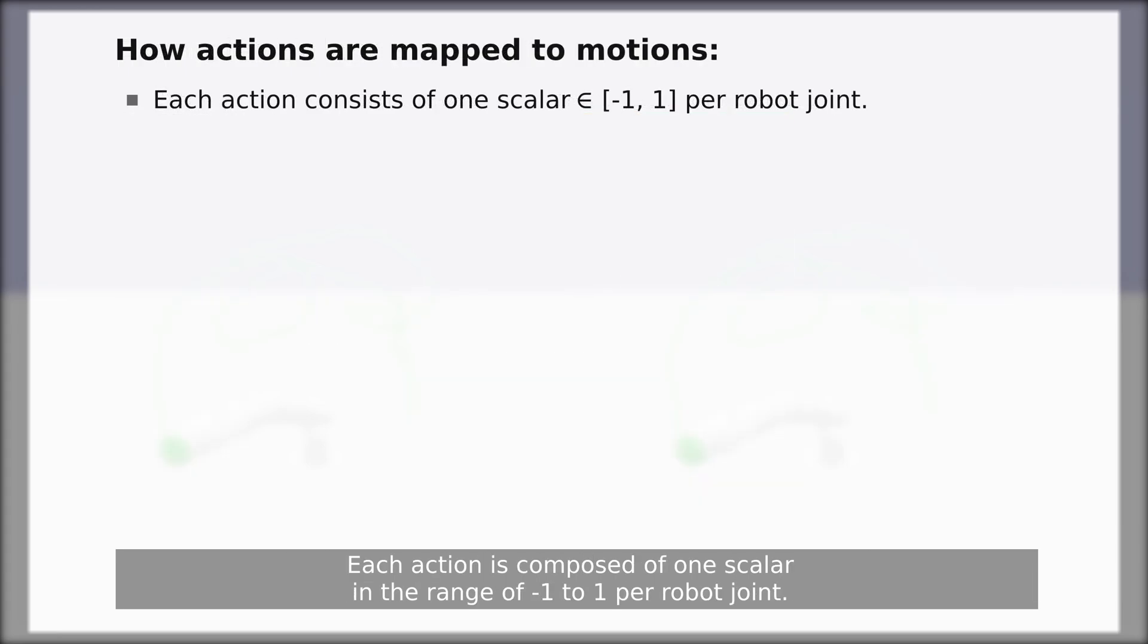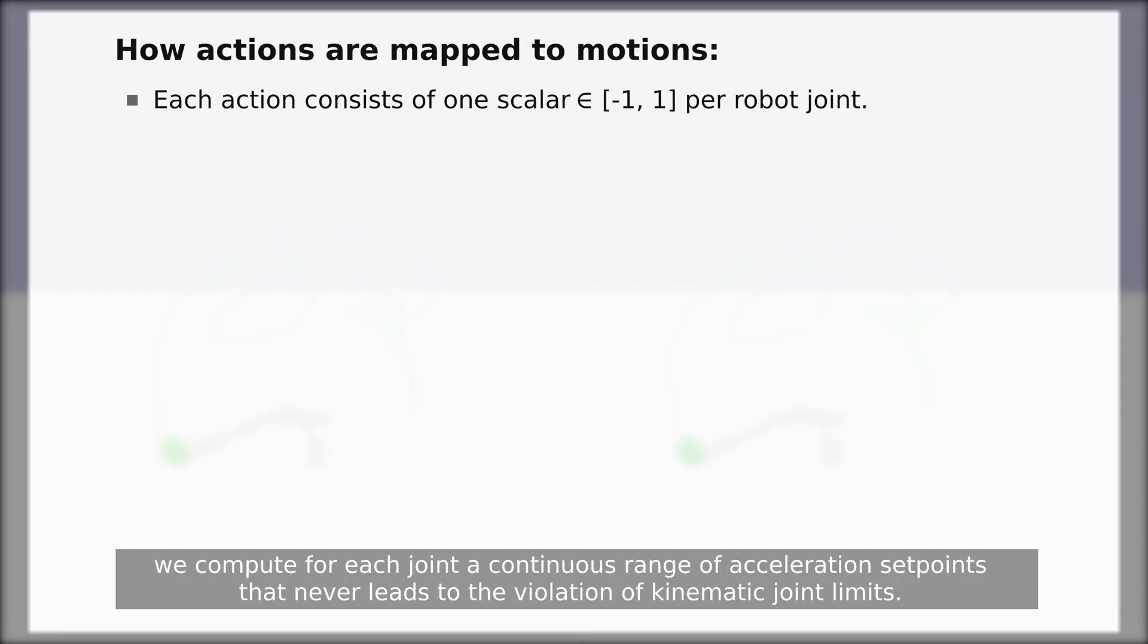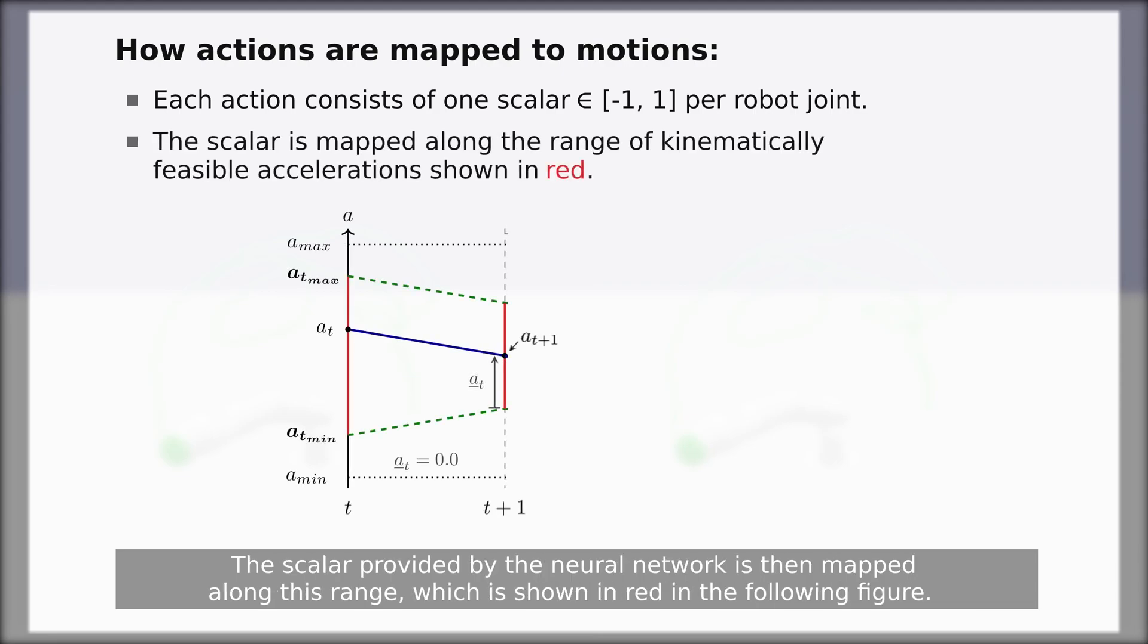Each action is composed of one scalar in the range of minus 1 to 1 per robot joint. In order to ensure compliance with the kinematic joint limits, we compute for each joint a continuous range of acceleration setpoints that never leads to the violation of kinematic joint limits. The scalar provided by the neural network is then mapped along this range, which is shown in red in the following figure.